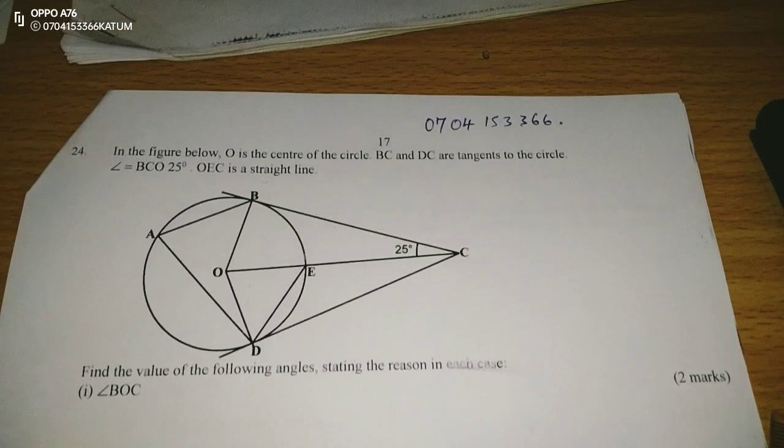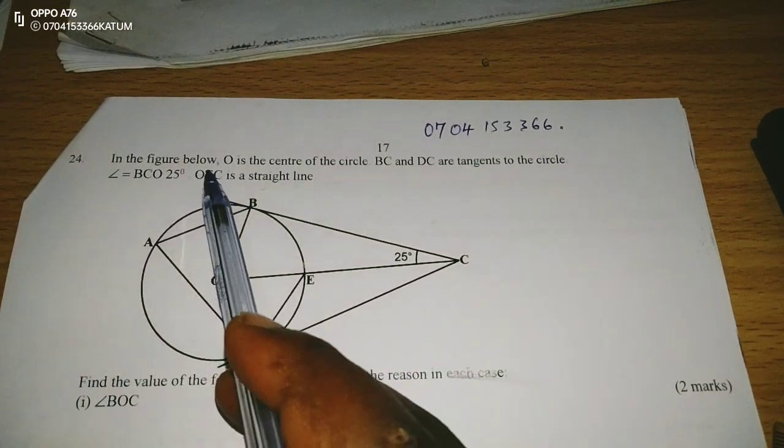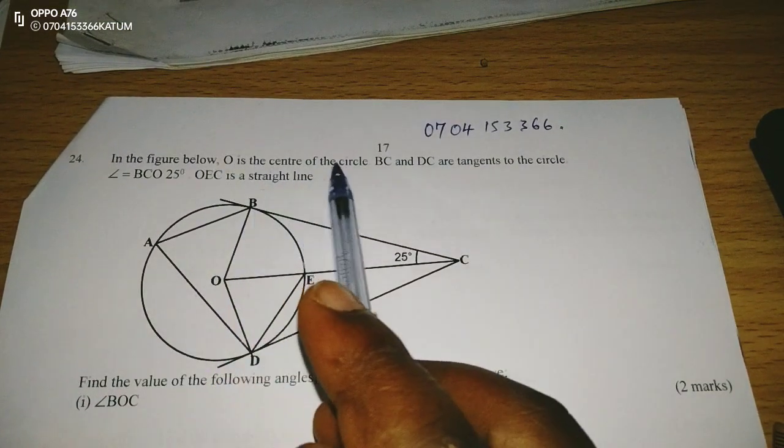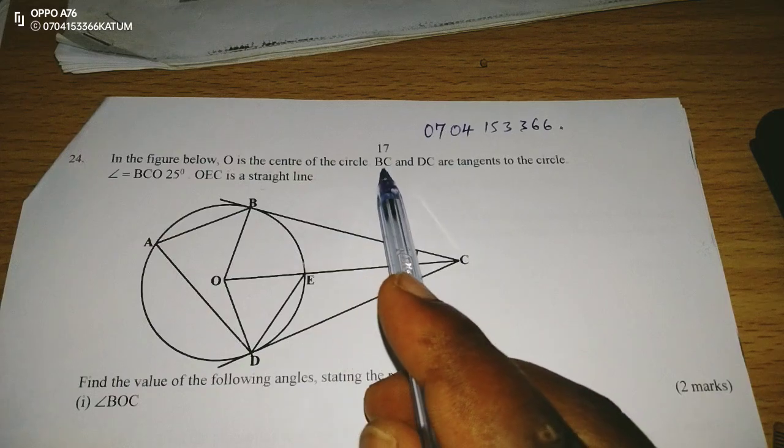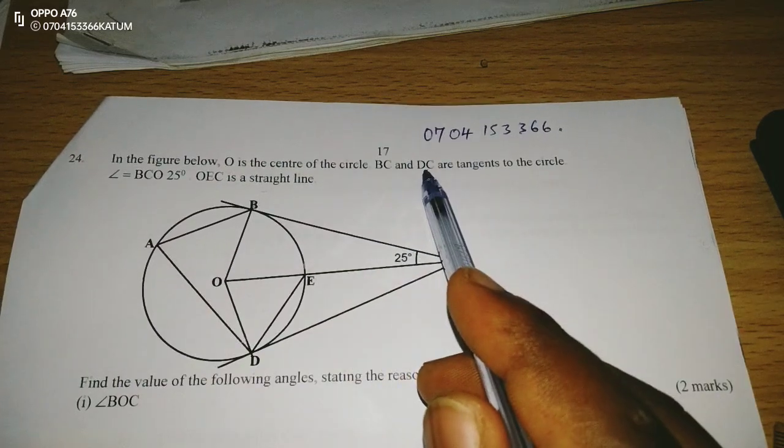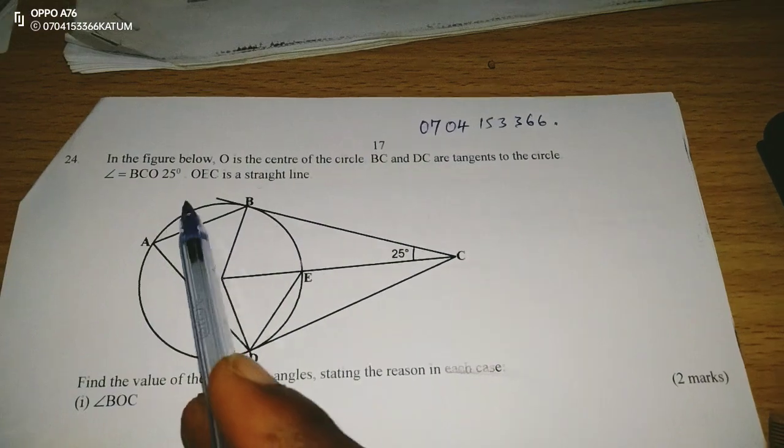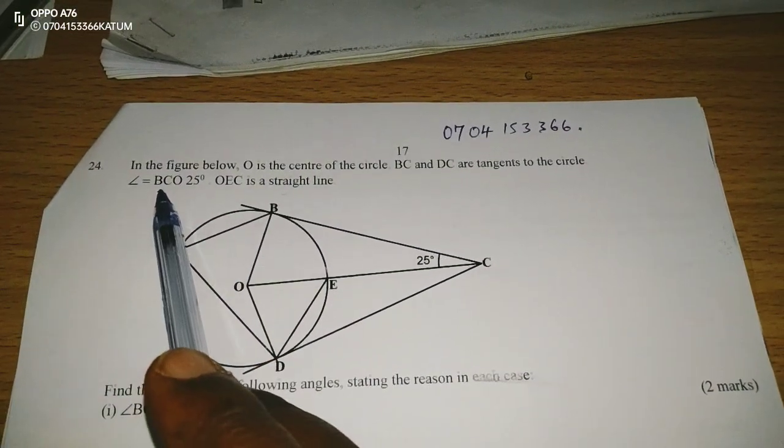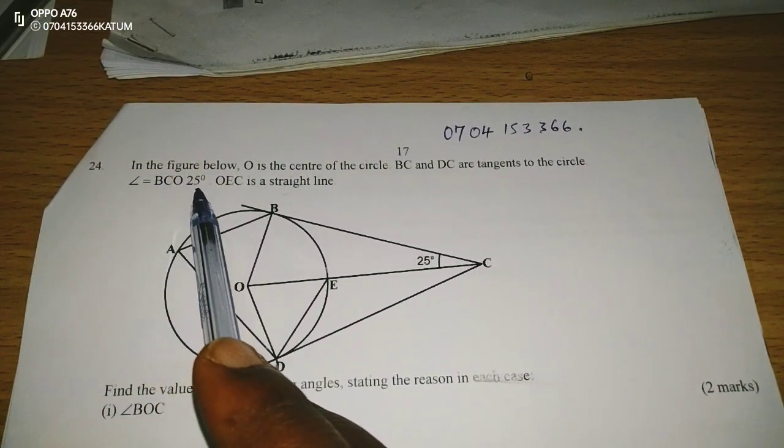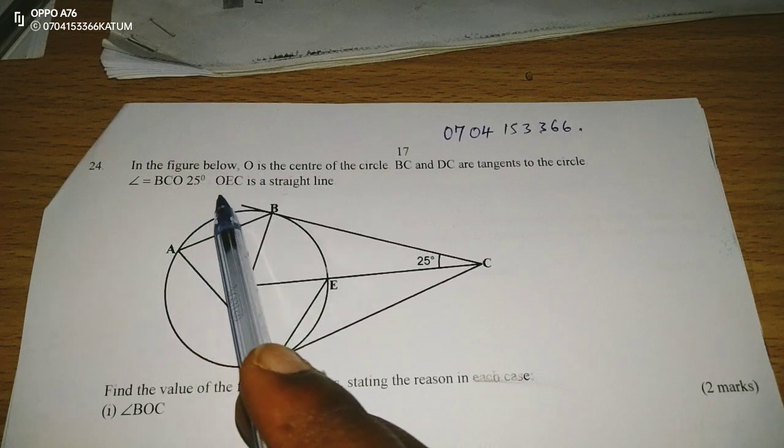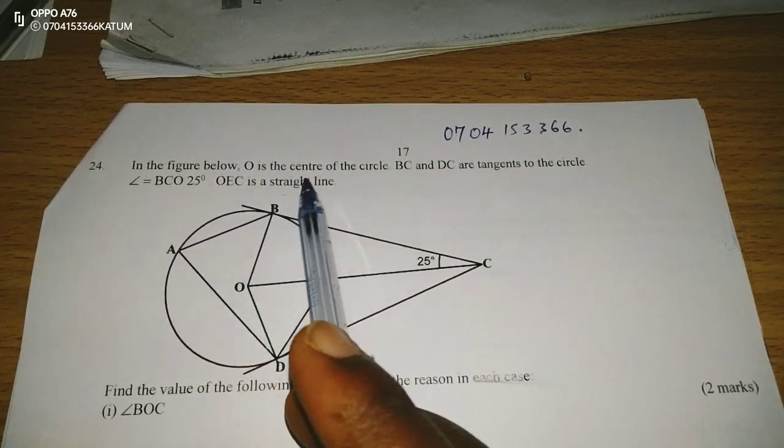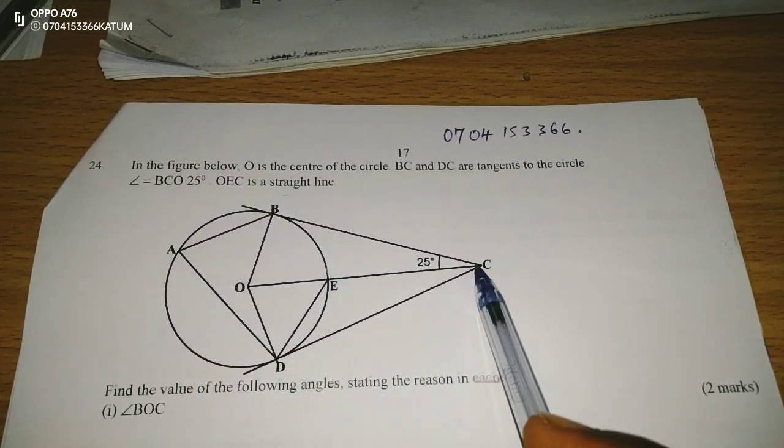We are told in question 24 that in the figure below, O is the center of the circle. BC and DC are tangents to the circle. We're also given that angle BCO equals 25 degrees, and OEC is a straight line.